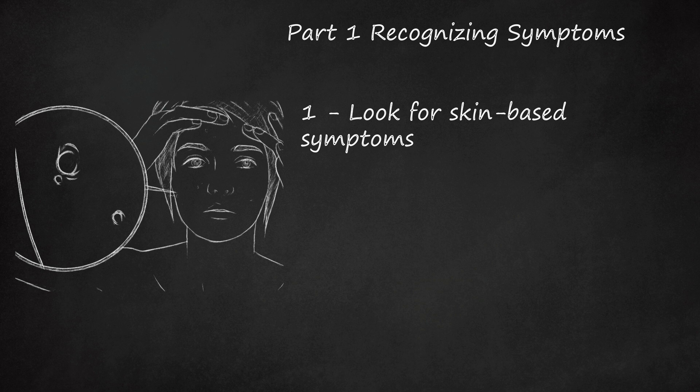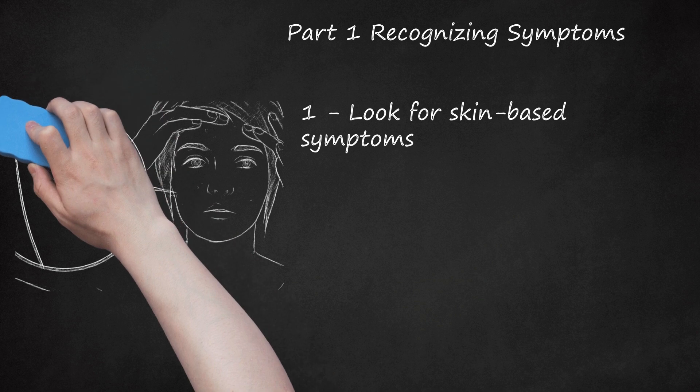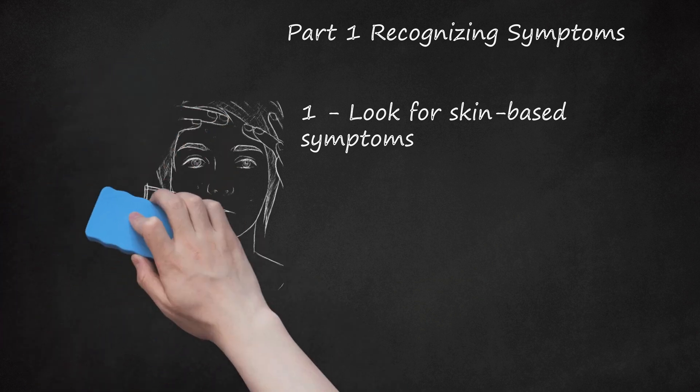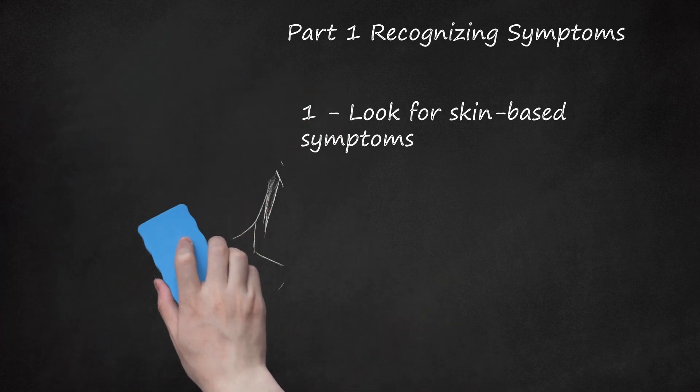Boils are the most common symptom of staph infection. These will be red and swollen areas that are filled with pus. Impetigo is a rash that can form large blisters and is contagious. Cellulitis will appear as a red or swollen area of skin. Sores that emit a discharge may appear in the affected area.